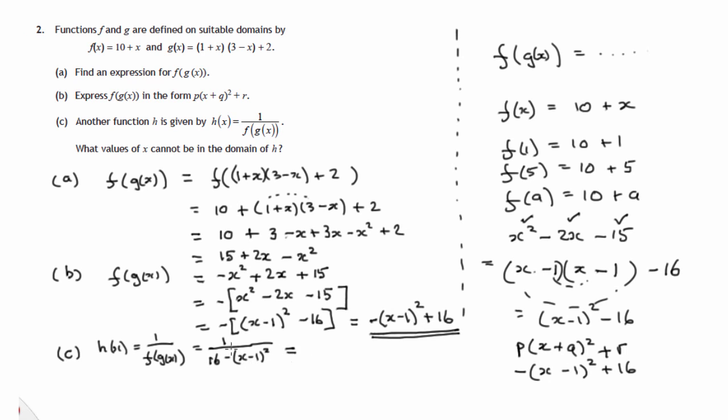Now the only difficulties we get with a function like this are when we attempt to divide by 0. It's the first commandment of mathematics, thou shalt not divide by 0. So the problems arise only if 16 minus x minus 1 all squared is equal to 0. Now that'll happen if x minus 1 all squared is 16.